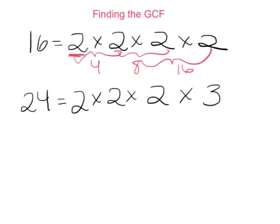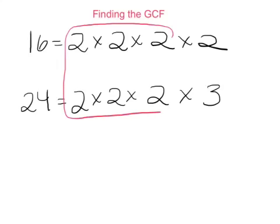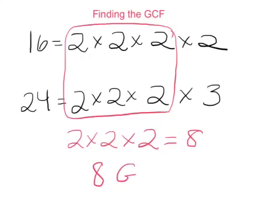So these prime factorizations help us to see the factors. When we want to find the greatest common factor of the two numbers, we want to find what is in common between 16 and 24. Looking at these two numbers, I see that 2 times 2 times 2 is what is in common between both 16 and 24. Therefore, the GCF of 16 and 24 is 2 times 2 times 2, which equals 8.